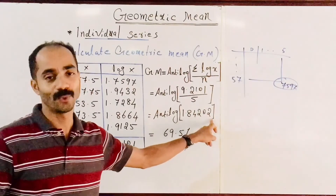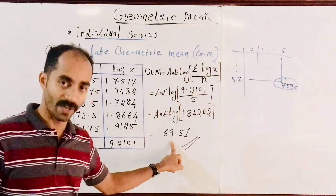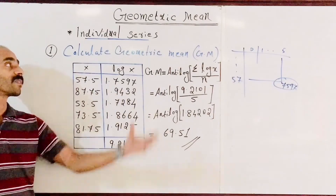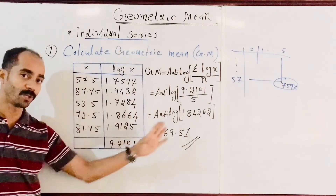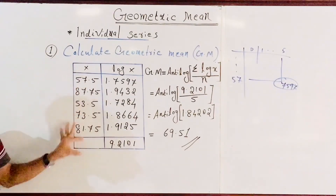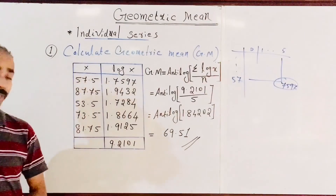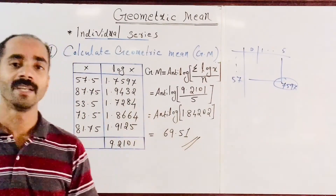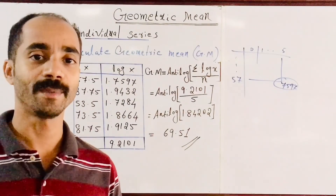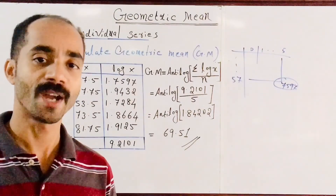After completing the log calculations and summing them, dividing by n = 5, and taking the antilog, the geometric mean comes out to approximately 69.5. That is the answer for today's example.